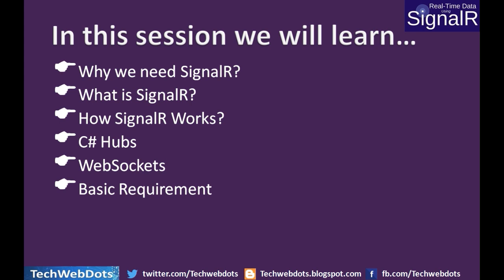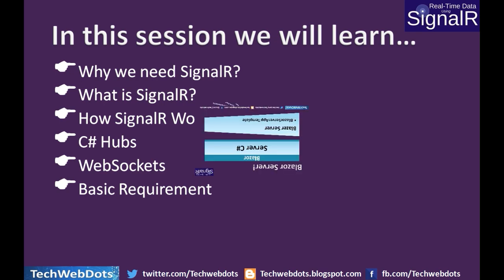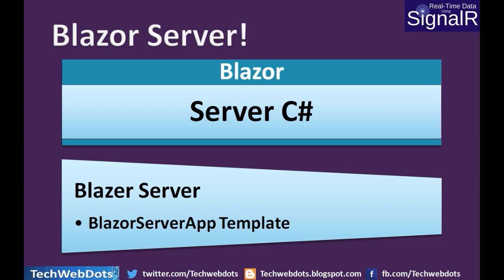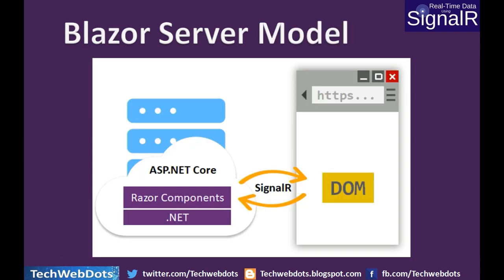In this session we will learn: why we need SignalR and what is SignalR, how SignalR works, what are C-Sharp hubs, what are WebSockets, and what are the basic requirements. If we are using a Blazor server template with C-Sharp, the model says the server and the client — which is our browser — will communicate through a SignalR connection.